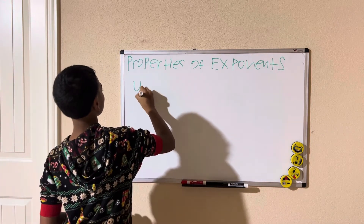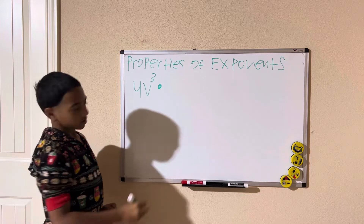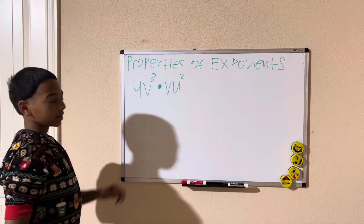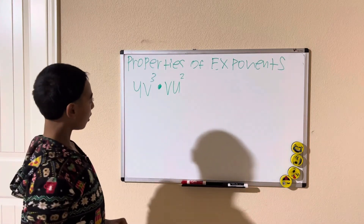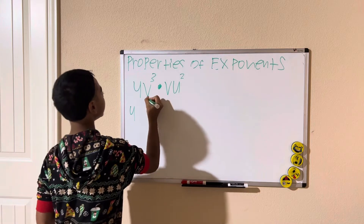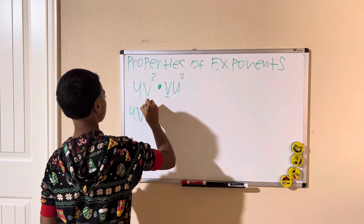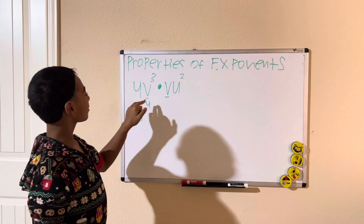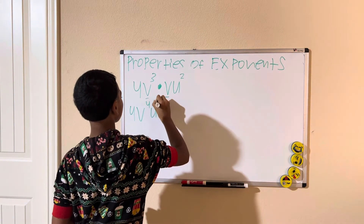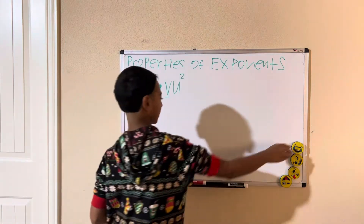Let's try one with multiple variables: 4v cubed times v times u squared. We still bring down the 4 since there's nothing to combine it with. Then v cubed times v gives us v to the fourth. And u squared stays as u squared. So our answer is 4v to the fourth u squared.